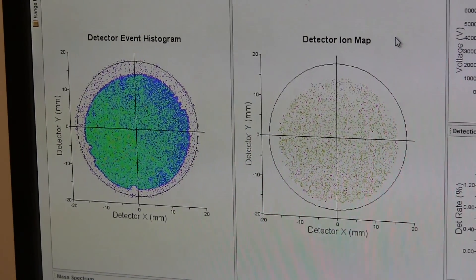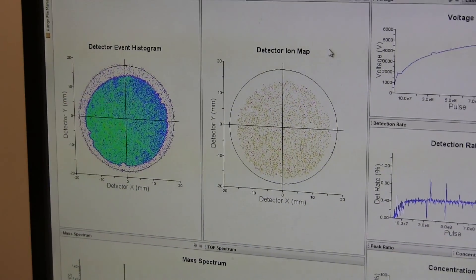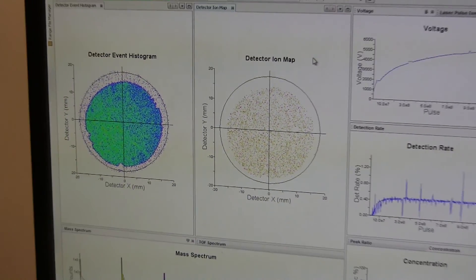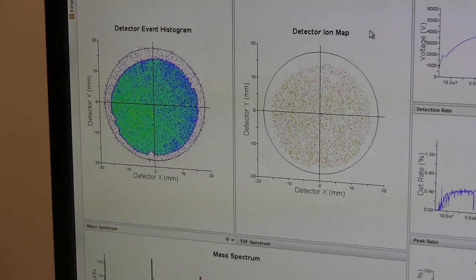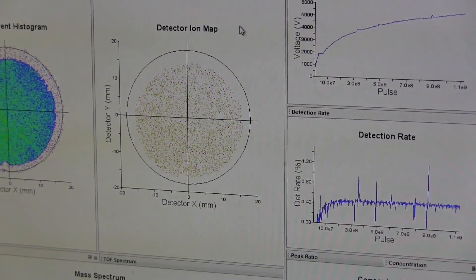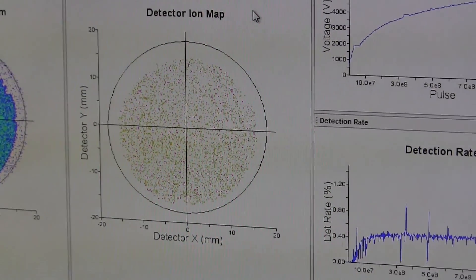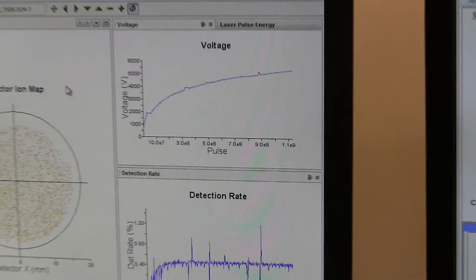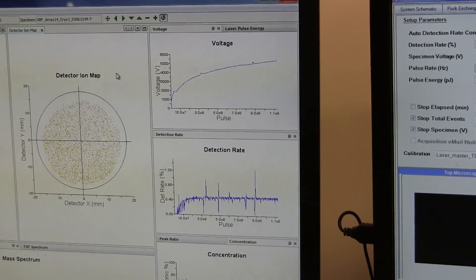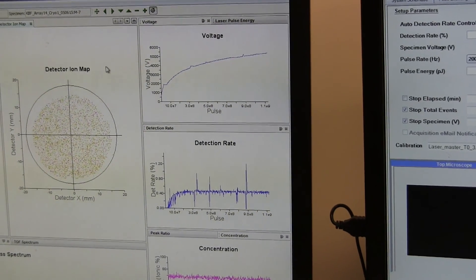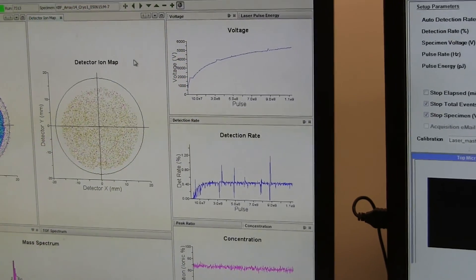So this is the screen that tells us what's going on inside the atom probe. So the histogram tells us the number of hits that the detector gets. It's basically a heat map showing where all the atoms are hitting the detector. The detector ion map tells us which specific ions are hitting that detector. So for example, the yellow dots are hydrogen atoms. The voltage curve basically tells us the amount of voltage that's passing through the tip.